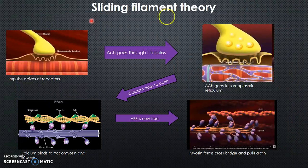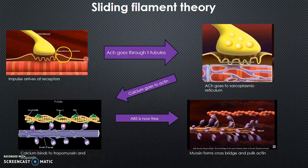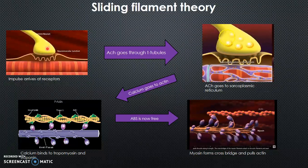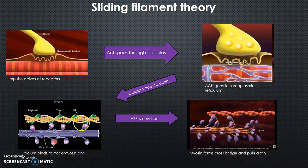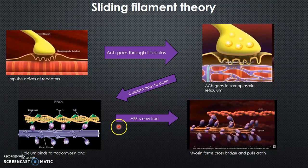The sliding filament theory is how the muscles actually contract. In the first image you can see the neuromuscular junction, which is where there is contact between a motor neuron and a muscle fibre. The bulb of the motor neuron contains synaptic vesicles containing acetylcholine or ACh, which are released through the T-tubules when the impulse arrives. The ACh then triggers the release of calcium in the sarcoplasmic reticulum, which is the store for calcium. The calcium ions attach to the troponin and tropomyosin, which frees up the active binding sites on the actin.